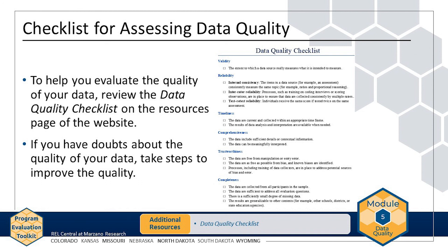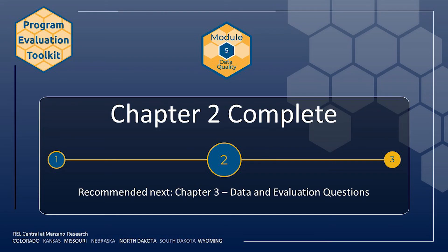In the AMP example, the evaluation team might change the test they are using to measure students' math knowledge, or offer additional training to observers who are having difficulty assessing tutors' use of instructional strategies, or if the evaluation team finds large amounts of missing data, the team might use a different data source to answer the evaluation questions. You will learn about ways to address some of these concerns in Modules 6 and 7. This concludes Chapter 2 of Module 5. In the next chapter, you will learn how to align your data sources to the evaluation questions you drafted in Module 2.